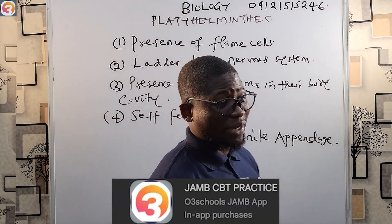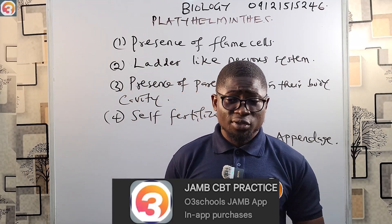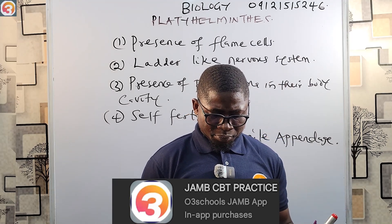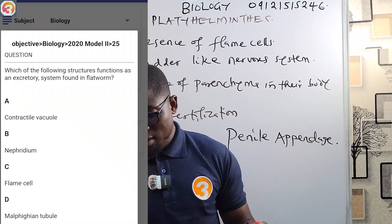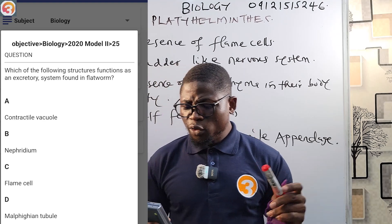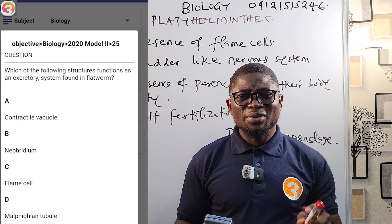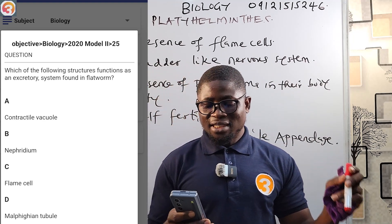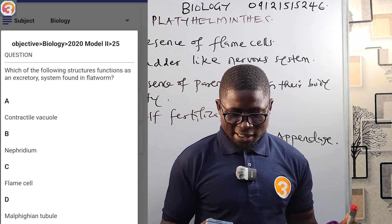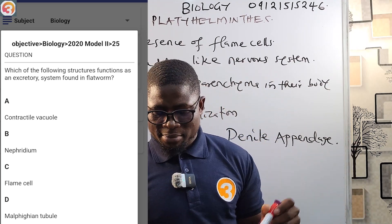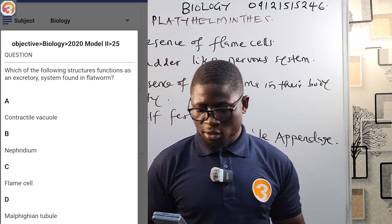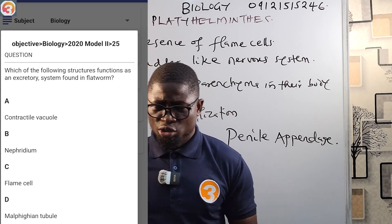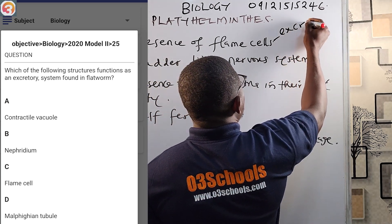Now let's go into the app and answer a question. This is a 2020 JAMB question, number 25: 'Which of the following structures functions as an excretory system found in flatworms?' Options: A — contractile vacuole; B — nephridium; C — flame cell; D — Malpighian tubule. The correct answer is C — flame cell, which we identified as the special excretory structure unique to Platyhelminthes.